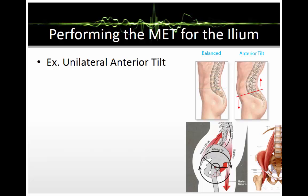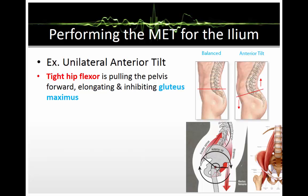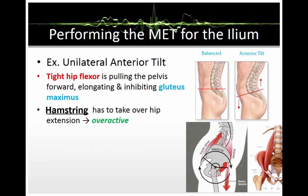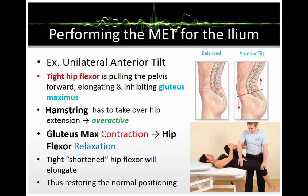This is an example of only one side of the hips being rotated — a unilateral anterior tilt. When evaluating the patient's ASIS levels on both sides, one side would be pulled down towards the thigh more than the other. In this case, the tight hip flexor on a single side is pulling the pelvis forward, resulting in elongation and inhibition of the gluteus maximus. With the gluteus maximus inhibited, the hamstrings take over hip extension and become overactivated. By contracting the gluteus maximus, the hip flexors will relax, and the shortened hip flexor will elongate, thus restoring normal positioning.